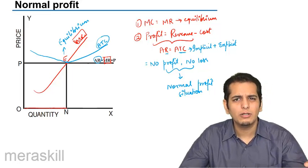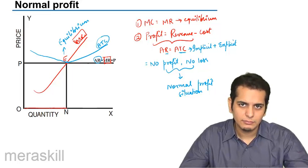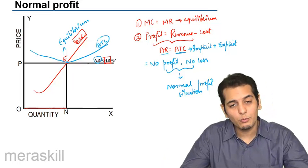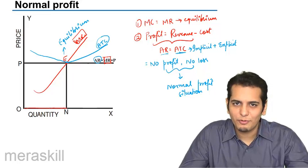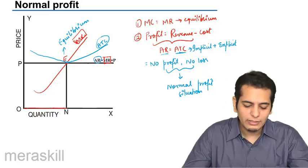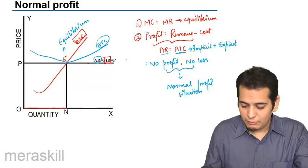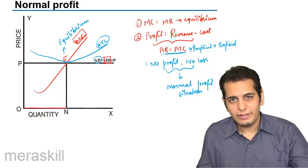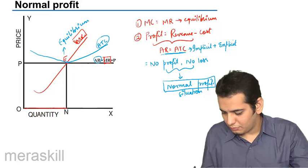You are able to earn the normal profits for your risk taking. Thus your AR and ATC are equal at this point, yet there are no supernormal profits. You will earn only normal profits. So when AR is equal to ATC you earn normal profits.